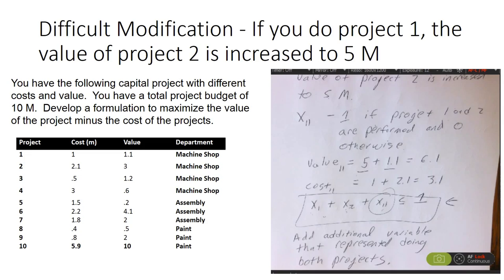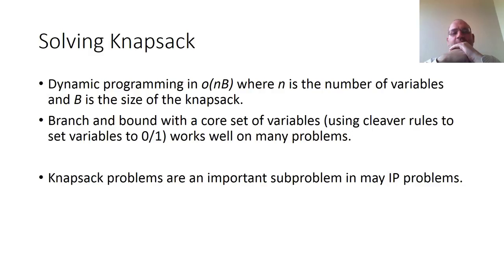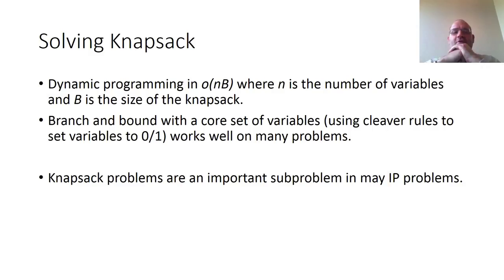Dynamic programming can be used to solve the knapsack problem in O(NB) time, where N is the number of variables and B is the size of the knapsack — this is called NB-hard in the ordinary sense. We don't have to go through all combinations, but the complexity is dependent on the data. Branch and bound with a core set of variables, using clever rules to set variables to 0 or 1, also works well on many knapsack problems. The knapsack is an important sub-problem in many integer programming problems.